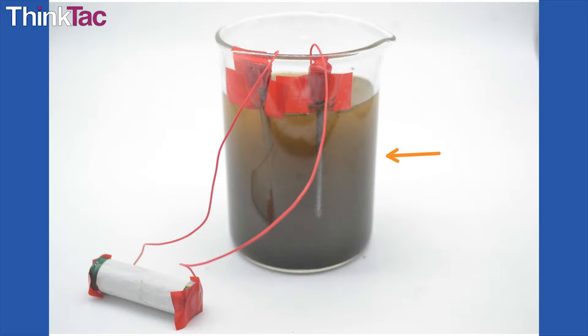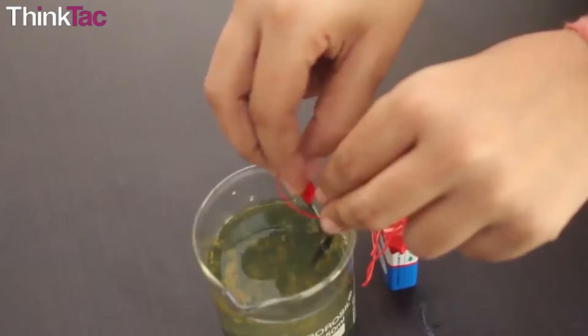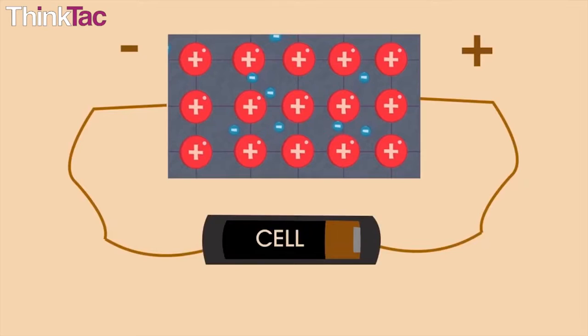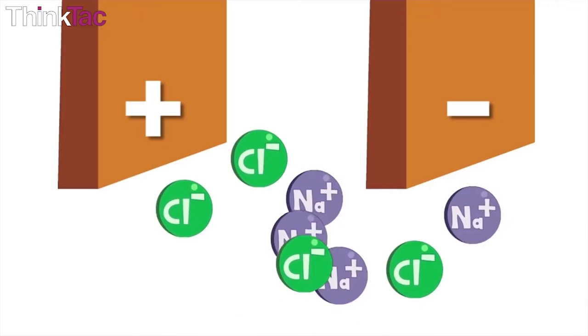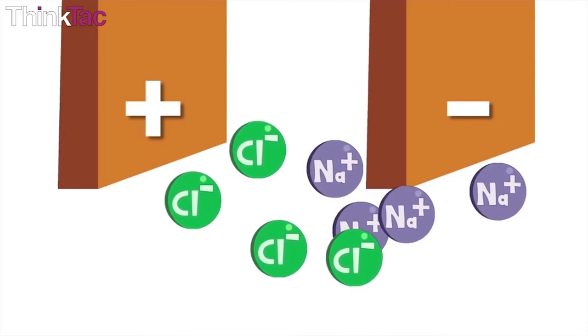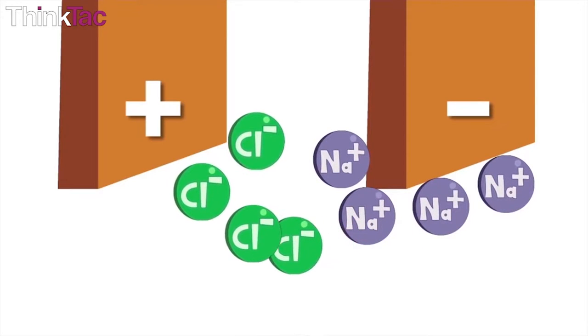you might be curious about what made the color of the water change and what made the nail rust. When you pass electric current through a solution, the ions move towards the opposite electrodes, in this case the sodium and chloride.